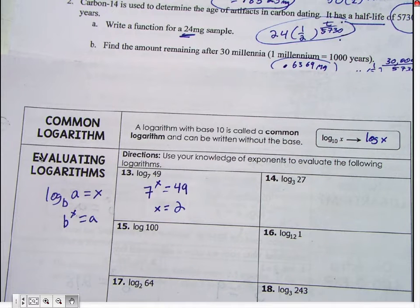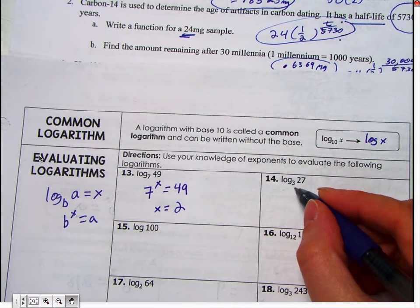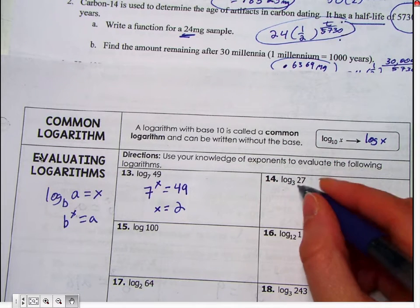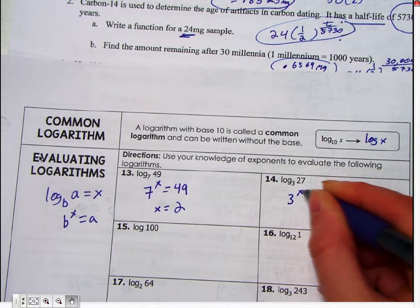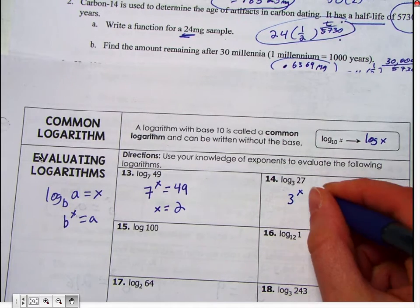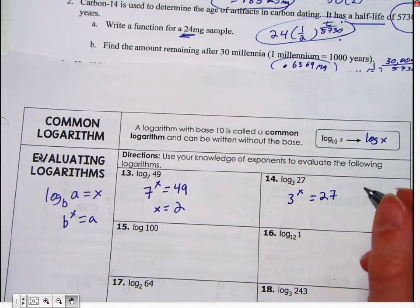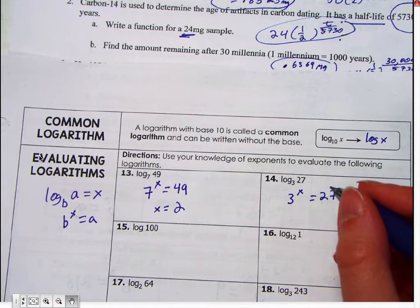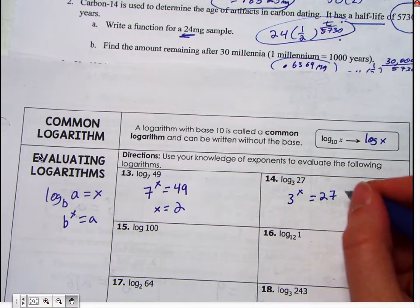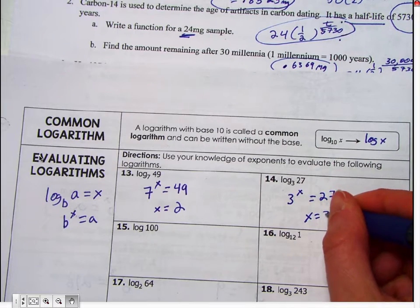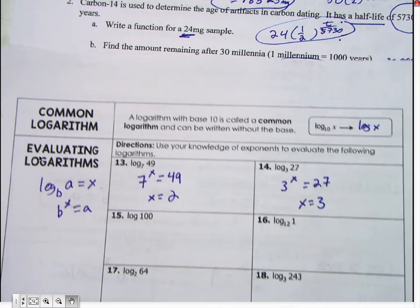Okay. Does somebody want to try fourteen or should I do one more? Okay. Log base three of twenty-seven should be three to the x, because it's not equal to anything, equals twenty-seven. And then what, how many times do we have to multiply three by itself to get us twenty-seven? Three. So x equals three.